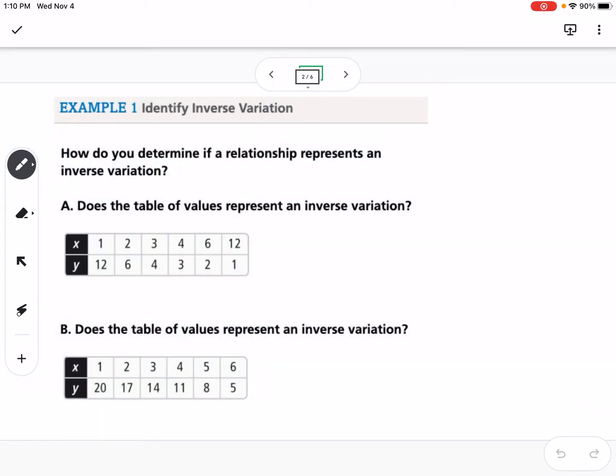Our first example is to identify inverse variation. How do you determine if a relationship represents an inverse variation? Does the table of values represent inverse variation? The way that we're going to determine this is you're going to multiply the x values and the y values together. If you get the same constant value for every x times y, then it is inverse variation.